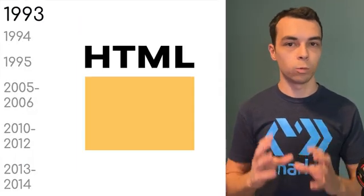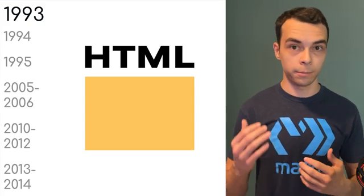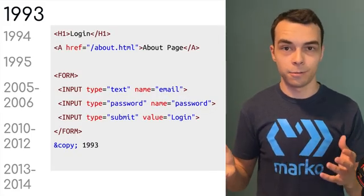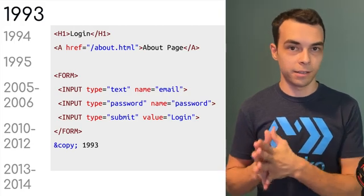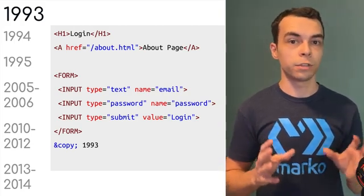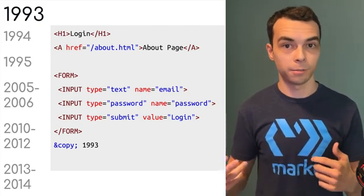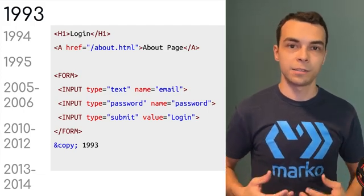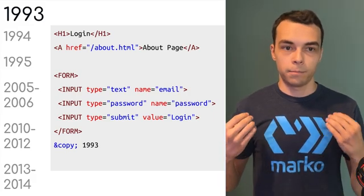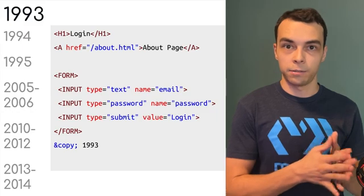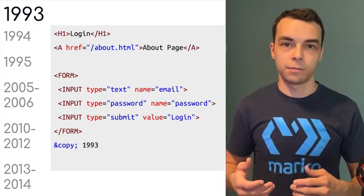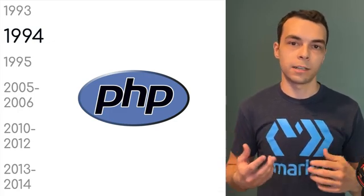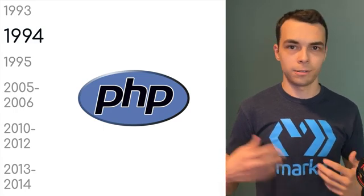1993 is when we first see the HTML 1.0 specification, and also one of the first popular browsers, Mosaic. At this point people were using uppercase tag names, and there were no divs or spans. But importantly there were two critical features we still use today: links and forms. HTML was really a document viewer with the ability to navigate between documents and submit information to a server. Pretty much immediately, people were using server-side rendering to generate HTML using different technologies. One of the earliest was PHP, which came in 1994, but people also used Perl, C++, and so on.